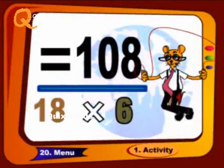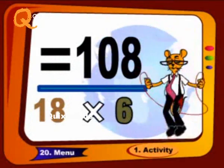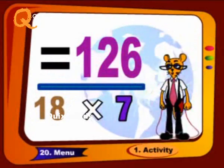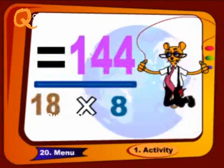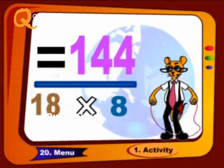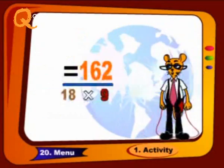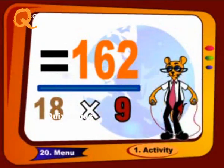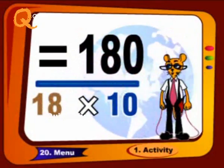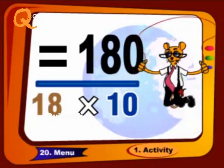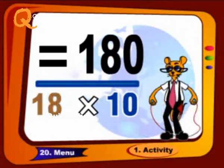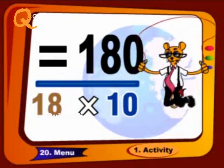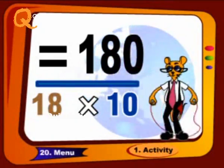18 6s are 108, 18 7s are 126, 18 8s are 144, 18 9s are 162, 18 10s are 180.